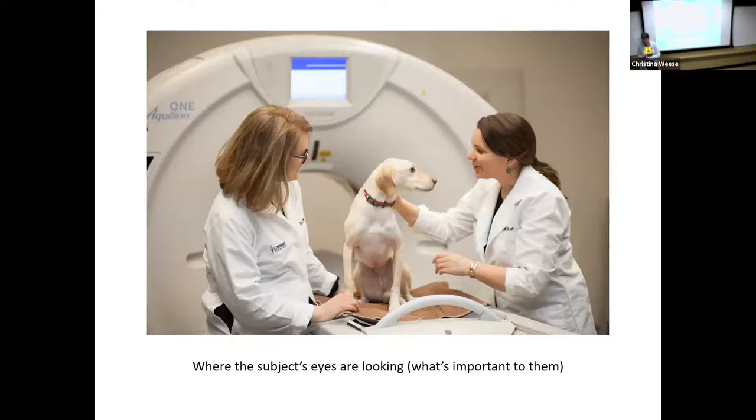Here's another one showing an example of where the subject's eyes are looking. So showing what's important to them, the connection between the vets and the dog. Instead of, you know, one of them could have been checking the equipment, looking directly at the camera. It's just subtle things that you get to make a decision about as a photographer.